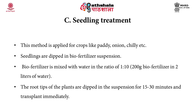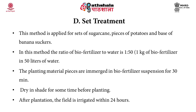The amount of biofertilizer varies with crop duration. For short-duration crops (less than six months), 10 to 15 packets (200 grams each) are mixed with 40 to 60 kg of organic manure or soil per acre. For long-duration crops, 20 to 30 packets are mixed with 80 to 120 kg of organic manure or soil per acre.